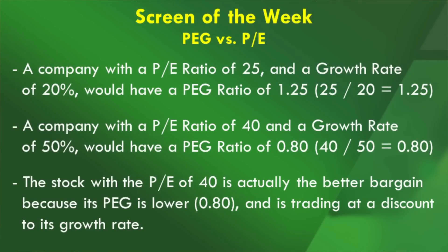Here are some examples of how you would use it in practicality. A company with a P/E ratio of 25 and a growth rate of 20% would have a PEG ratio of 1.25 — you take your 25 PE divided by your 20% growth rate to get 1.25. A company with a P/E ratio of 40 and a growth rate of 50% would have a PEG ratio of 0.80 — you take your 40 PE divided by your 50% growth rate to get 0.80.